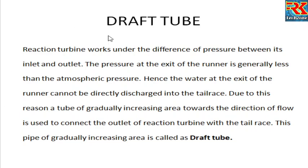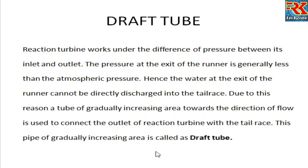A reaction turbine works under the difference of pressure between its inlet and outlet. The pressure at the exit of the runner is generally less than atmospheric pressure. Hence, the water at the exit of the runner cannot be directly discharged into the tailrace. Due to this reason, a tube of gradually increasing area towards the direction of flow is used to connect the outlet of the reaction turbine with the tailrace. This pipe of gradually increasing area is called a draft tube.